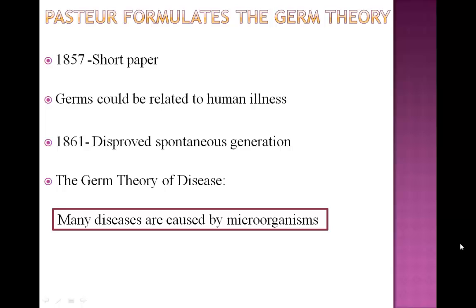In 1857, Louis Pasteur published a short paper in which he explained the souring of wine by bacterial cells. He also mentioned that germs such as bacteria might be related to human illnesses. Five years later, after he disproved the theory of spontaneous generation, he formulated the germ theory of disease. This theory states that many diseases are caused by microorganisms.